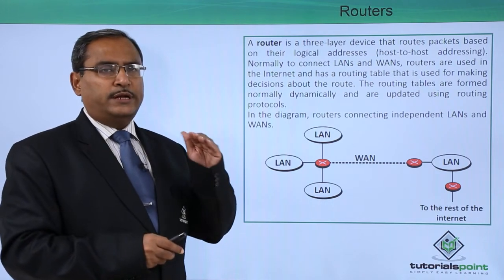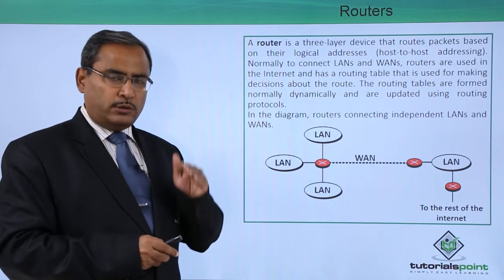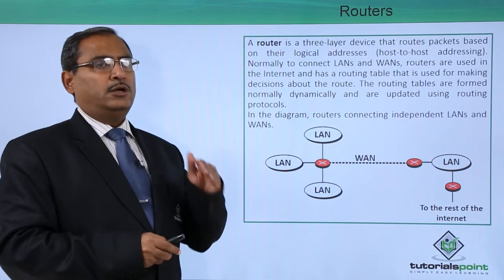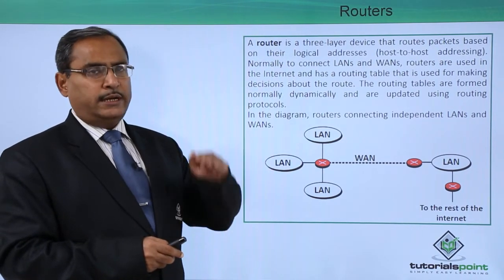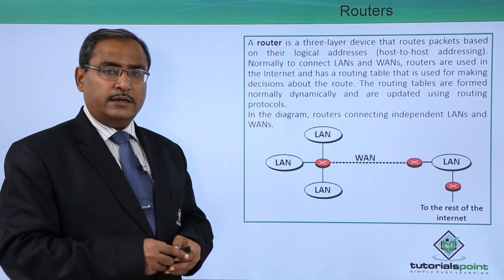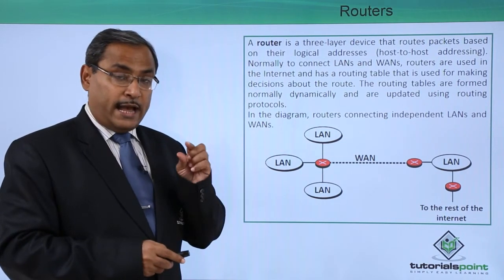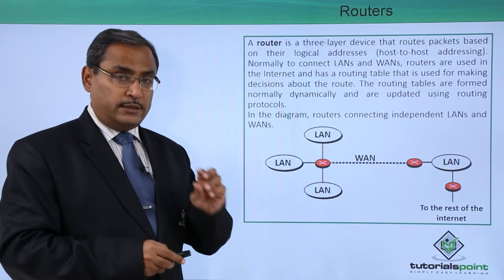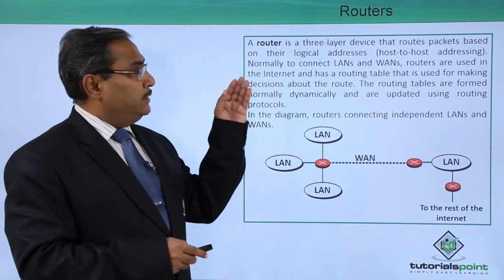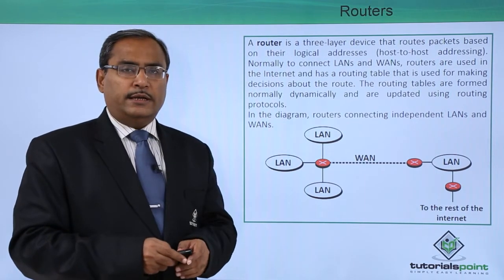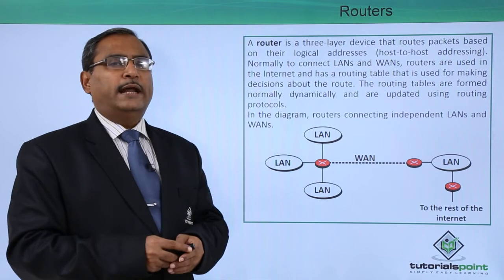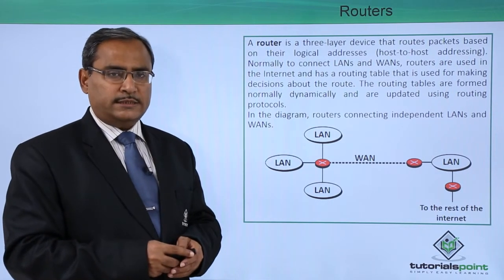The router works up to the network layer, and below that we have the data link layer, and below that the physical layer. So it works up to the third layer, which is why it is also known as a three-layer device. Since it works at the third layer, it can take routing decisions, because the network layer has the task of performing routing decisions.